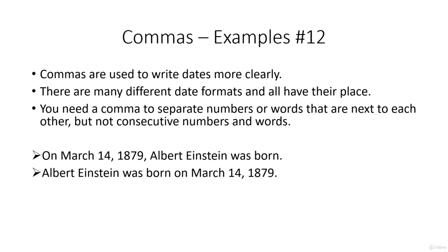Or we can write Albert Einstein was born on March 14th, 1879. And again we have a comma between the 14 for the day and the year. Or if we write it like this, which is a more typically European format, the party was on Monday, January 7th, 2019.